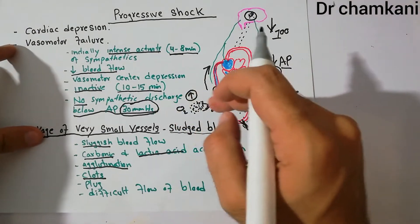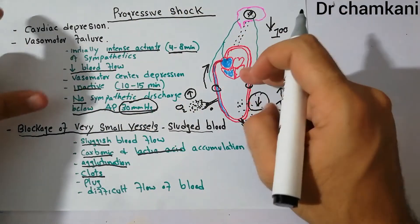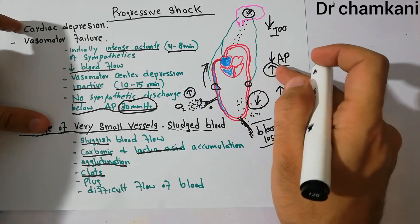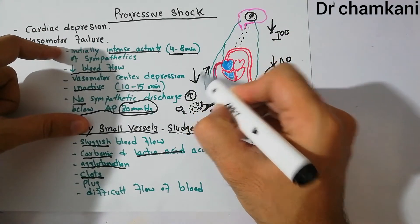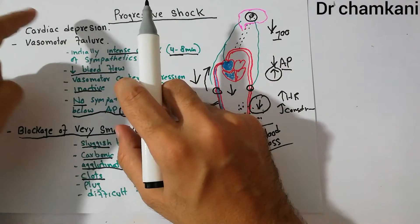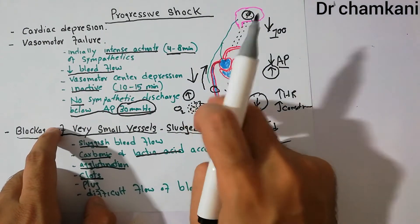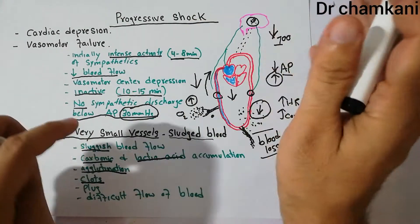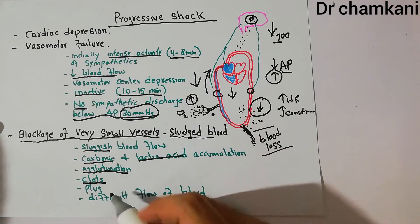This condition further increases the severity of shock and converts non-progressive to progressive shock because when blood flow stops, venous return decreases, cardiac output falls, arterial pressure decreases further, more blockage occurs, venous return falls more, cardiac output decreases further — creating a vicious cycle. After cardiac depression and vasomotor failure, this blockage of small blood vessels is another important factor in the continuation of progressive shock, ultimately leading to the irreversible stage.